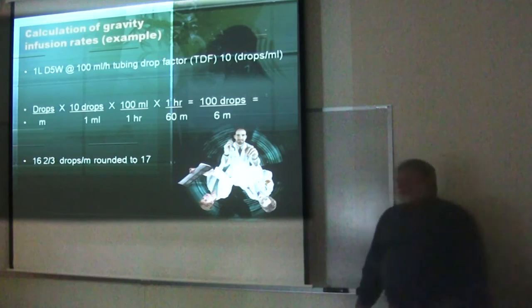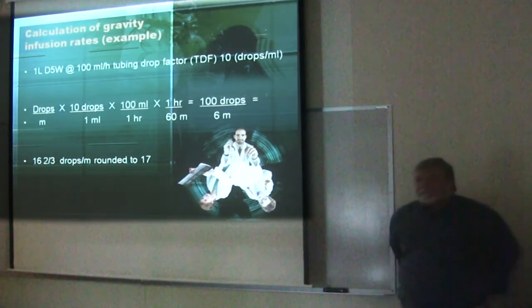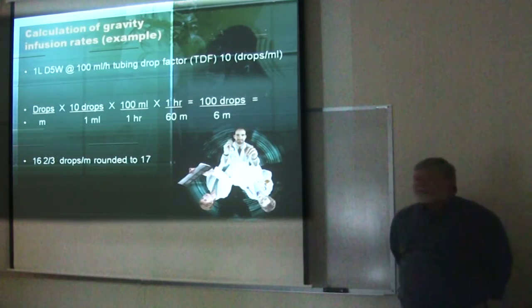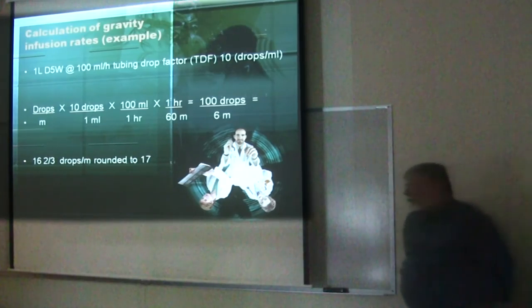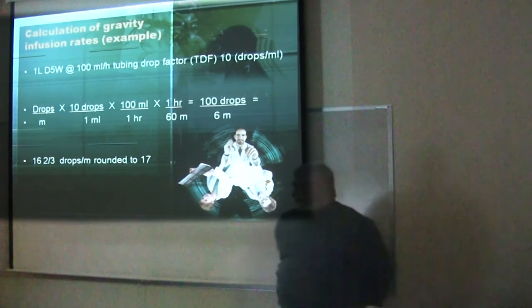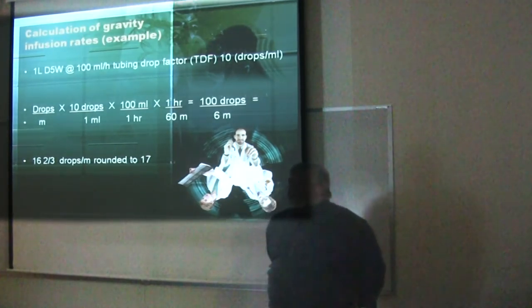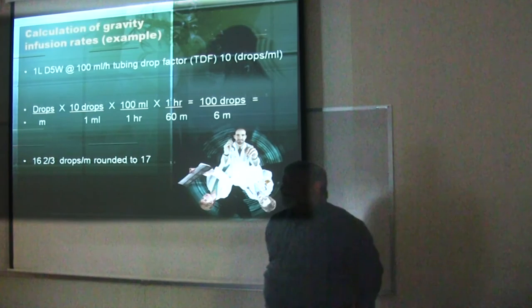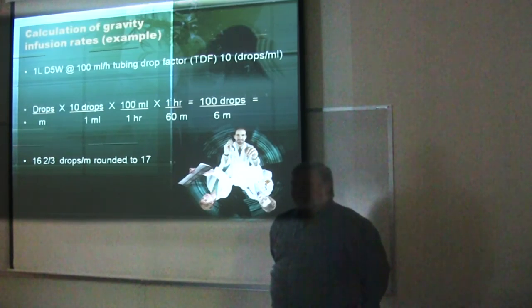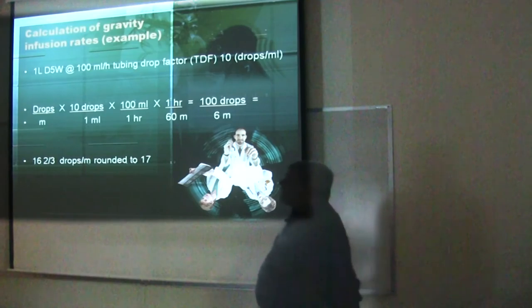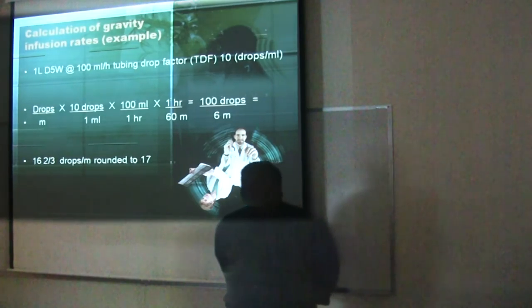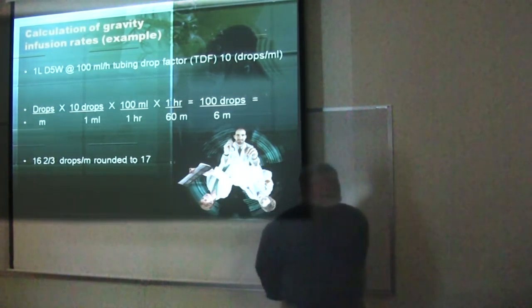Have you heard of a micro drip set? This is used in a pediatric unit, or in critical care if you have really potent drugs — vasoactive drugs. Micro drip sets have a drip factor of 60 drops per mL. So if you're counting that for 30 seconds, that's 180 drops.